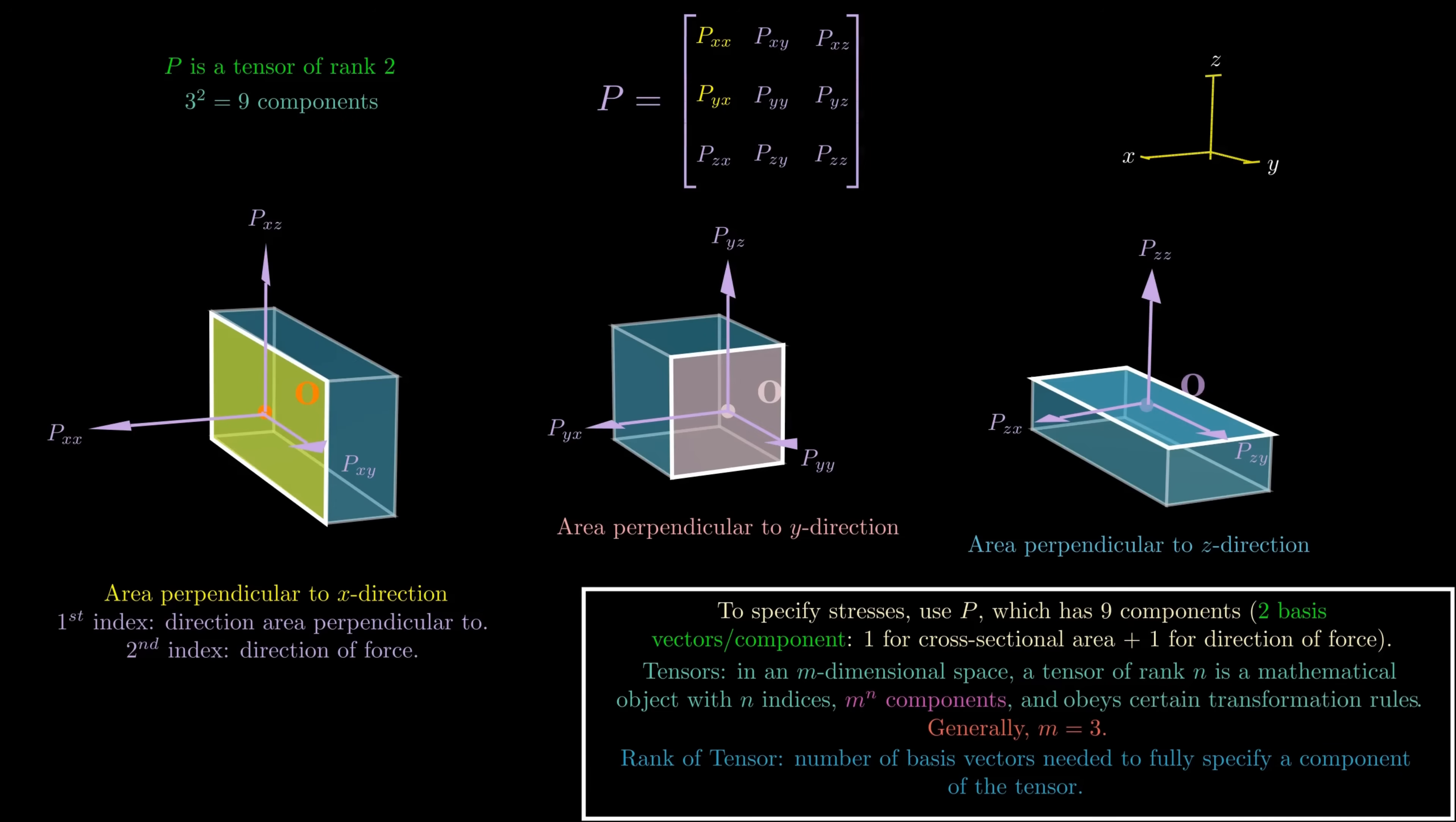Now, something I want to mention is that even though I've written P in the form of a matrix, P is not actually just a matrix. It's a fairly common misconception that rank two tensors and matrices are the same thing. That's not quite correct. A matrix is just an array of numbers, whereas a tensor has special transformation properties. It obeys certain transformation rules. Of course, we can use a matrix to represent a tensor, but a tensor actually has a deeper physical significance, so it would be rather inaccurate to say that a tensor and matrix are the same thing.